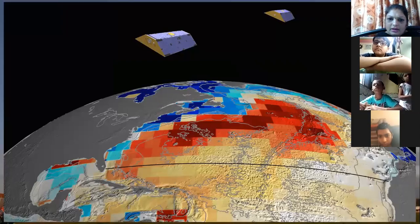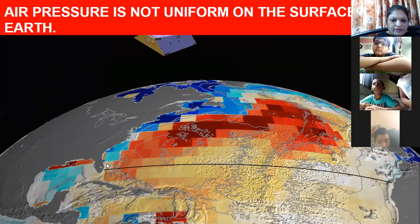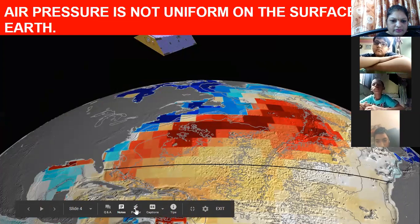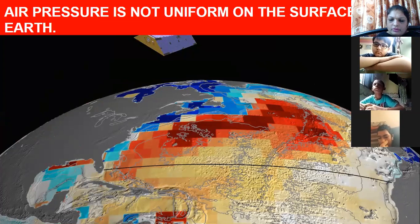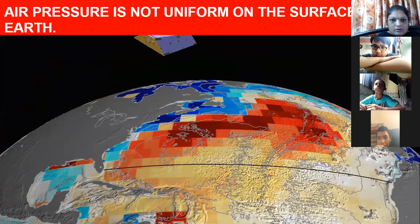Moving ahead, as I told you, air pressure on the surface of the earth is not uniform. In all places, air pressure is not uniform — somewhere it will be more, somewhere it will be less. So air pressure is not equal on the surface of the earth.